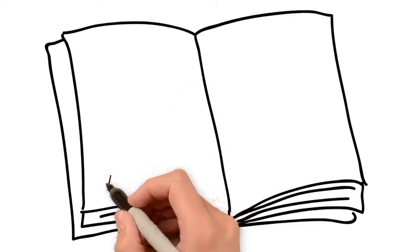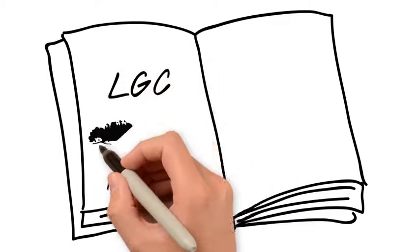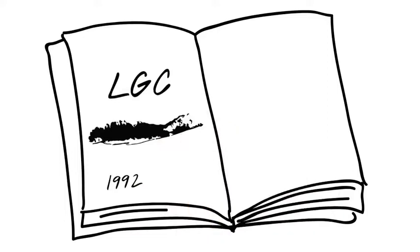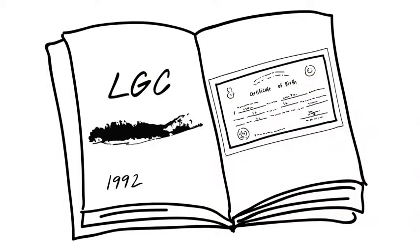Once upon a time, back in 1992, Lorraine Gregory Communications, LGC, was born in Long Island, New York, to proud parents Lorraine and Gregory Demetrio.